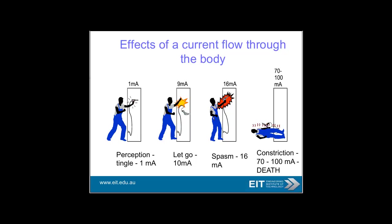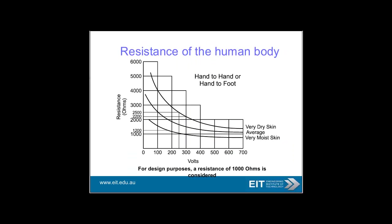A typical current tingle is at one milliamp. Let-go threshold is around 10 milliamps. Spasm at 16 milliamps. And 60 to 100 milliamps is potentially fatal. Current flow can vary the damage done to your body. Body resistance does vary — with dry skin versus very moist skin, you'll see the voltage sensitivity can change significantly.